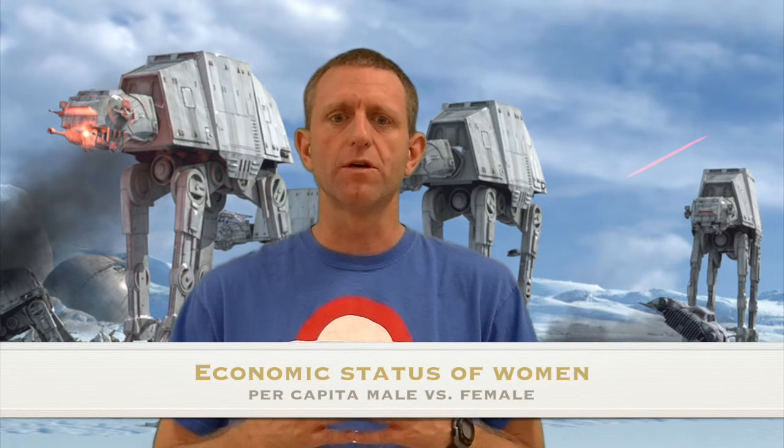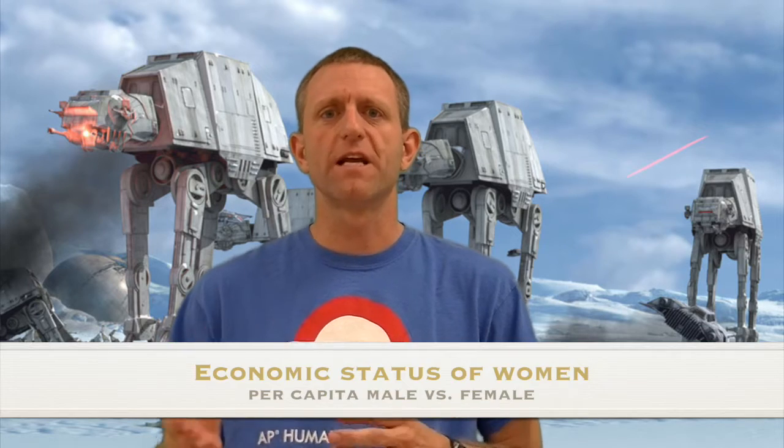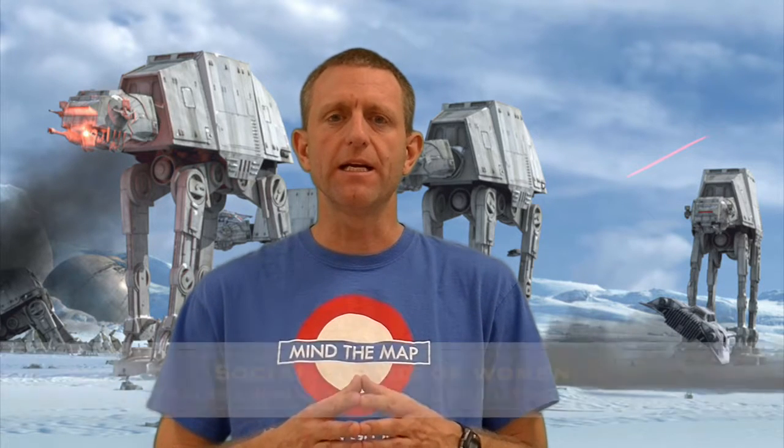Let's take a look at GDI and GEM and how they apply to a country's development. GDI stands for Gender-related Development Index, and it checks the status of women in a society. There are three aspects to it. The first is economic: we look at the per capita income of males versus females — averaging all male and female salaries — to see where their salaries rank.